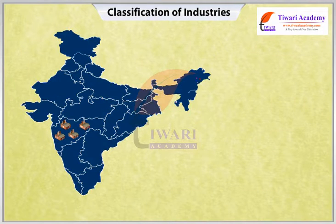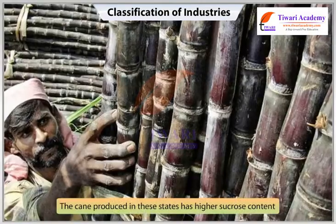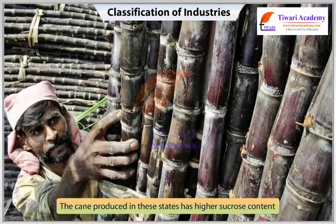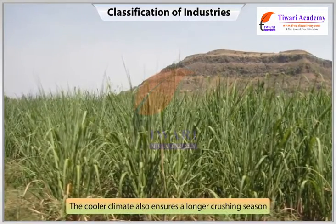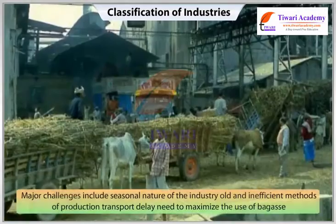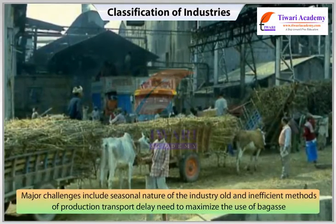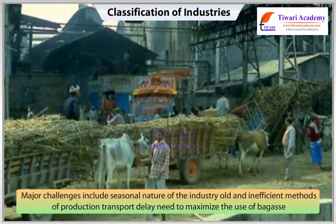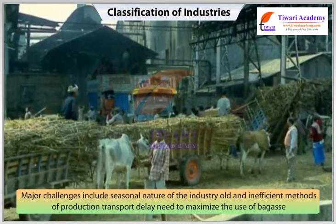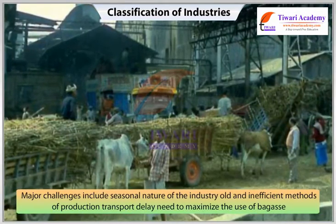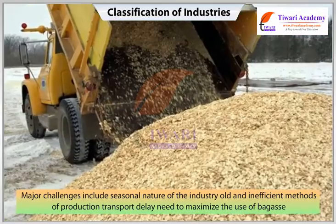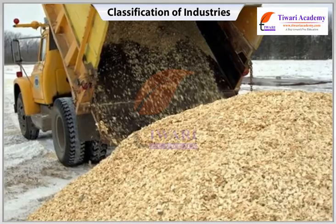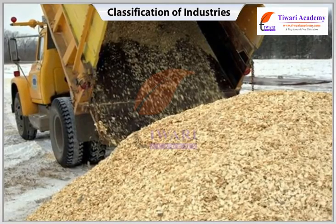In recent years, mills have been concentrating in southern and western states, especially Maharashtra. The cane produced in these states has higher sucrose content, and the cooler climate ensures a longer crushing season. Major challenges include the seasonal nature of the industry, old and inefficient methods of production, transport delays in reaching cane to factories, and the need to maximize use of bagasse, which can be used as fuel for electricity generators.